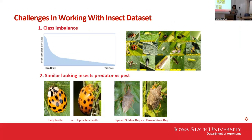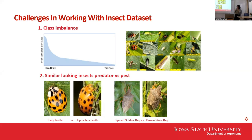Another challenge is similar-looking insects where one could be a pest and another a predator. A good example is the ladybird beetle — I thought all ladybirds were our friends, but digging deeper into the dataset, we found that epilachna beetle and hudda beetle are actually pests on brinjal and potato. They look like ladybird beetles but are not. Similarly, stink bugs can look very similar, yet one is a pest and the other a predator — and we don't want to kill our friends.